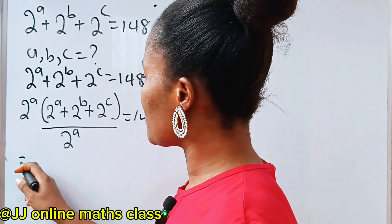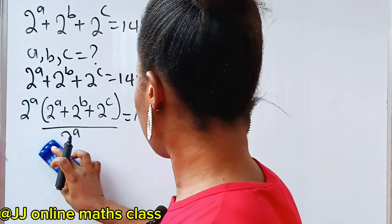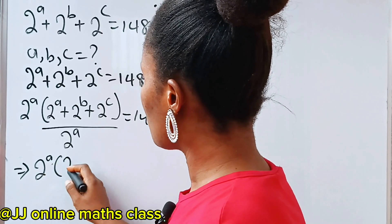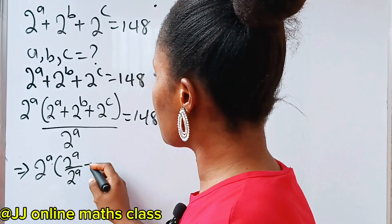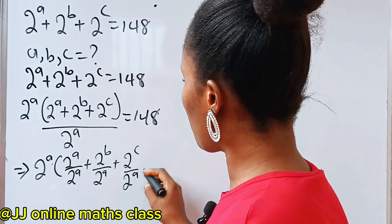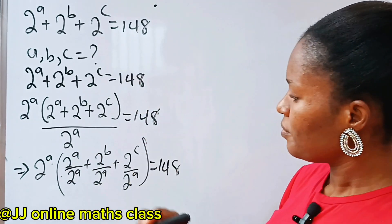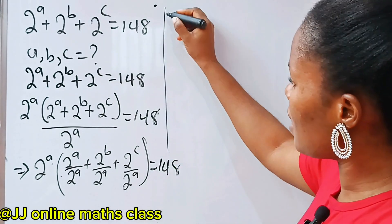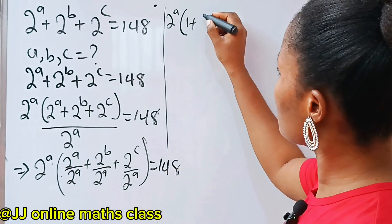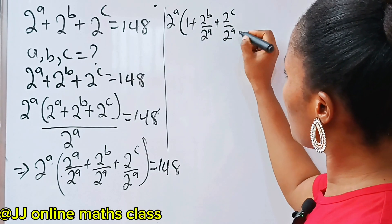Now, we can rewrite this as 2 to the power of A multiplied by a bracket. This implies that 2 to the power of A bracket: 2 to the power of A over 2 to the power of A, plus 2 to the power of B over 2 to the power of A, plus 2 to the power of C over 2 to the power of A. This can be written as 1 plus 2 to the power of B over 2 to the power of A plus 2 to the power of C over 2 to the power of A. It's equal to 148.